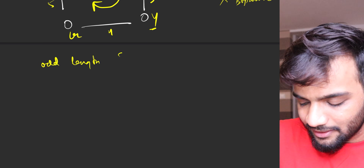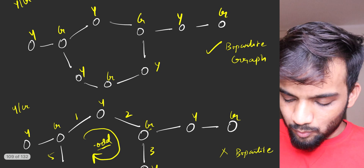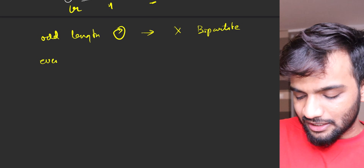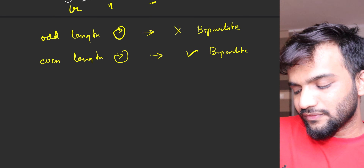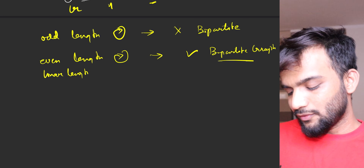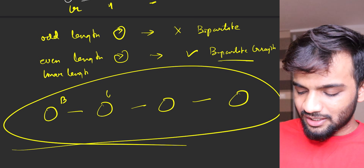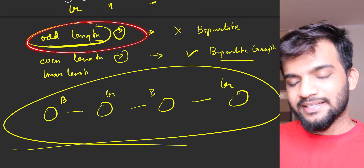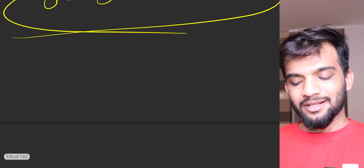If a graph has an odd-length cycle, it will never be bipartite - remember this. Apart from that, if the cycle length is six, that is an even length, and that is a bipartite graph. Similarly, any linear graph can be colored blue, green, blue, green, so it is bipartite. Any graph which does not contain an odd-length cycle is bipartite, and any graph that contains an odd-length cycle cannot be bipartite.